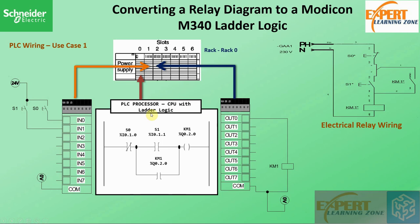This is the ladder logic for this electrical schema. Notice that here we have used two normally open switches in the physical wiring, but in the PLC logic we have represented S0 with a normally closed contact and S1 with a normally open contact. If I press S1, this contact becomes true and closes. Since S0 is a normally closed contact, current will flow through it to S1 and then to KM1, which is the output coil.